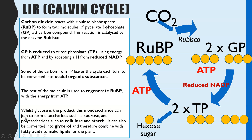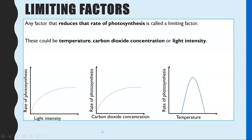Whilst glucose is the most common product, AQA uses the phrase 'organic substances' because those hexose sugars can be converted into a whole range of different carbon-containing compounds. Glucose could go on to form disaccharides such as sucrose, polysaccharides such as cellulose for the plant cell wall, or starch for glucose storage. It could also be converted into a different molecule such as glycerol, which can combine with fatty acids to make lipids.